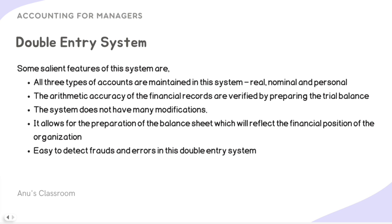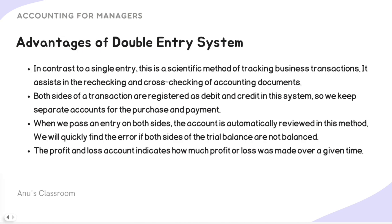Some salient features of the double entry system: multiple types of accounts are maintained — real, nominal, and personal — based on the traditional classification. Different types of accounts are maintained, so we can verify the arithmetic accuracy of financial records by preparing a trial balance. The system allows for the preparation of a balance sheet that reflects the financial position of the organization. It is very easy to detect frauds and errors — in contrast to single entry, this is a very scientific method.